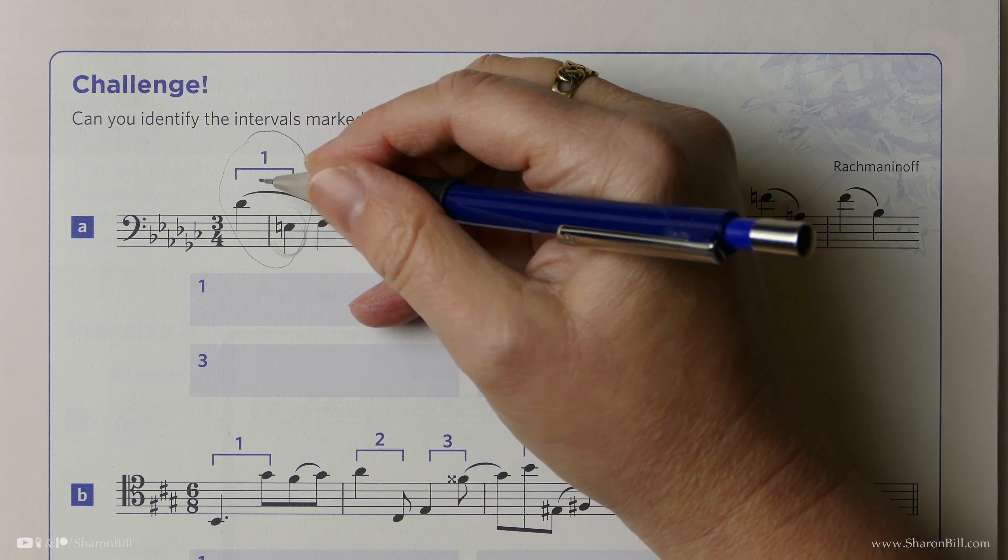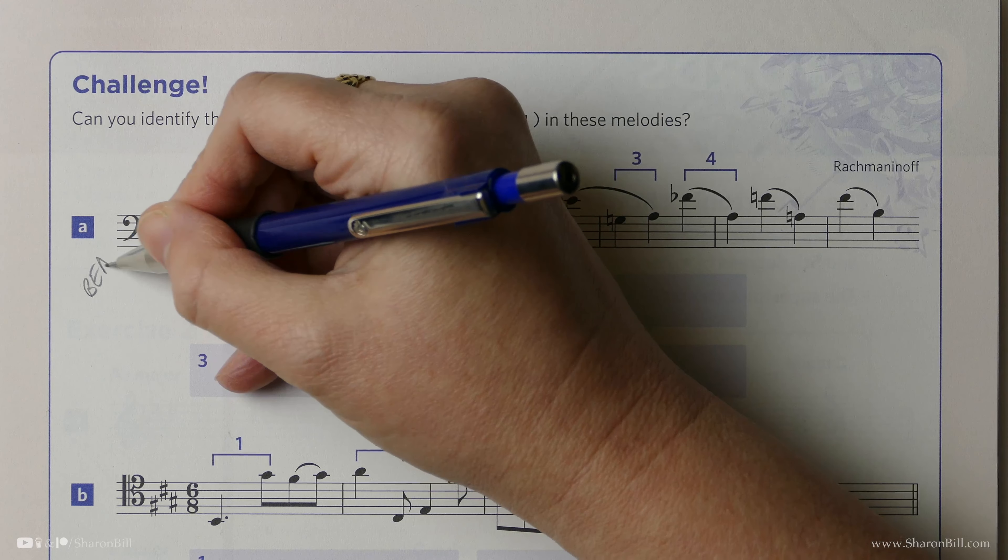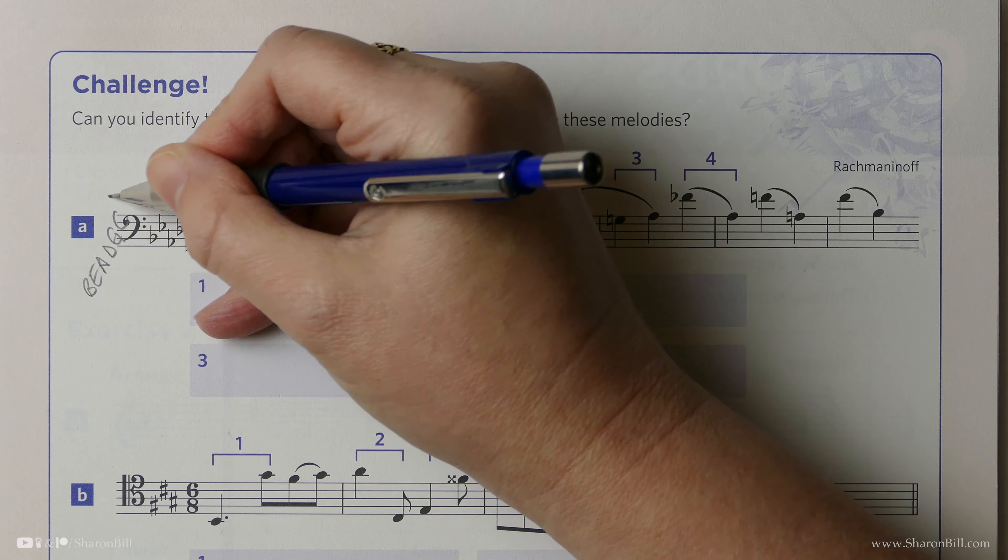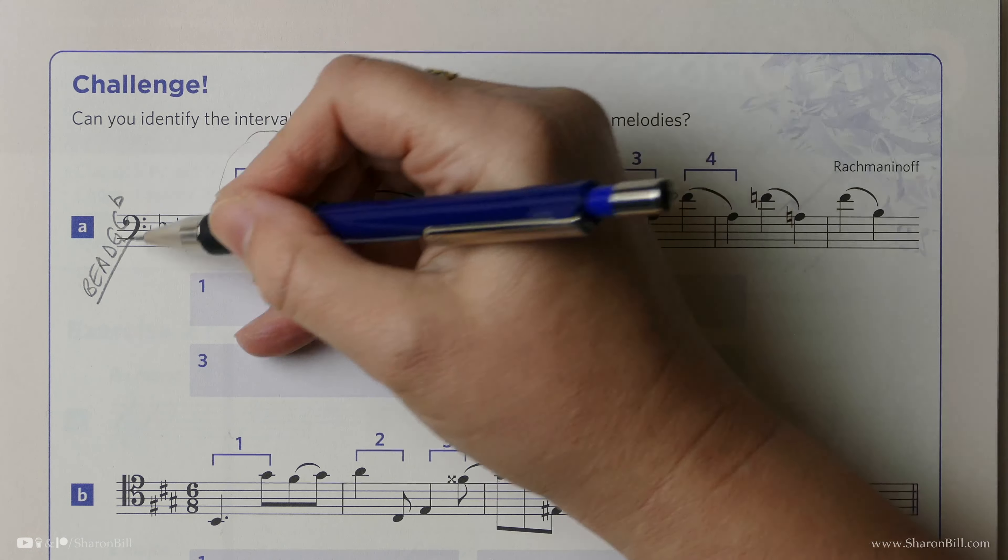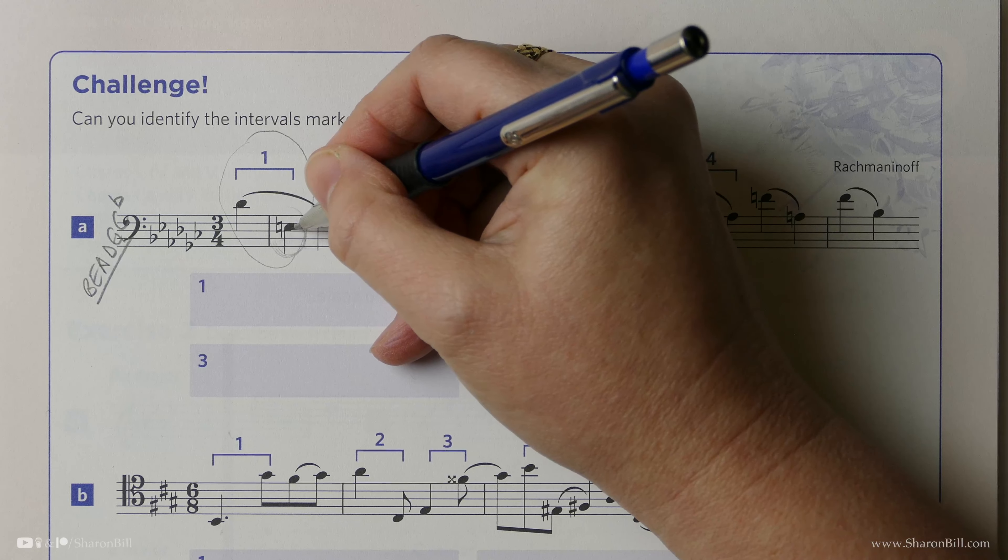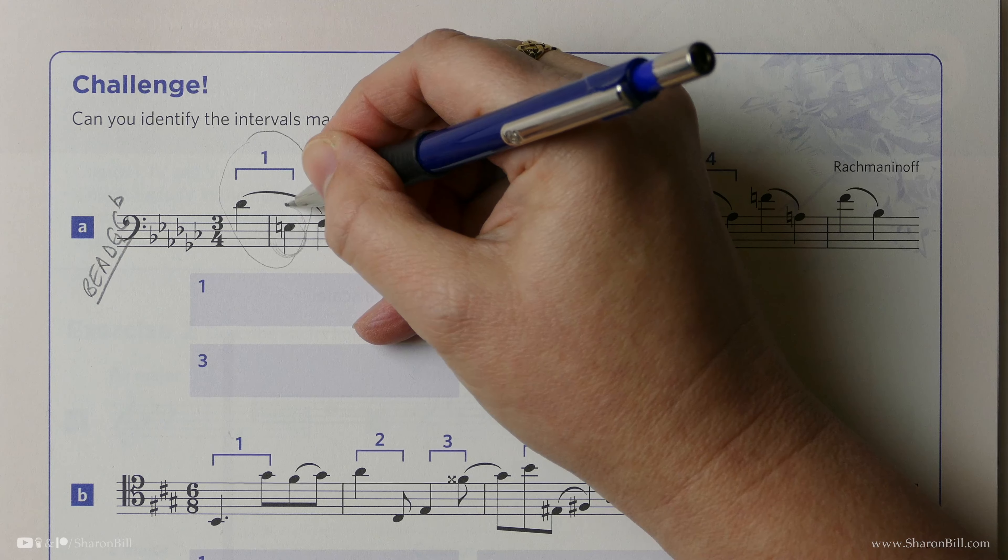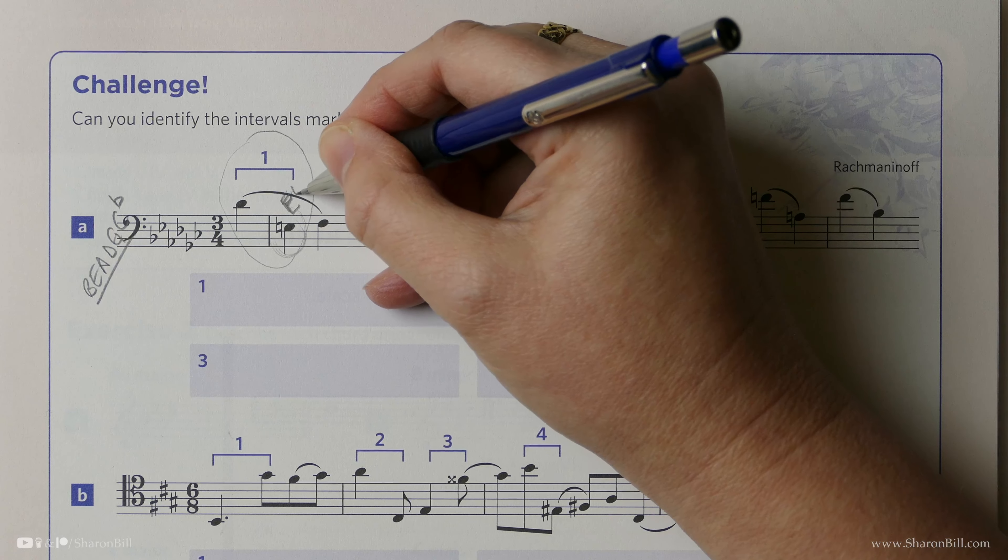So we have a key signature of B-flat, E-flat, A-flat, D-flat, G-flat, and C-flat. But apart from seeing how it relates to notes, we always take the lowest note as our tonic. So here we have an E-natural. We're in the bass clef. We have an E-natural as our lowest note.